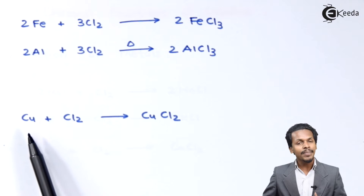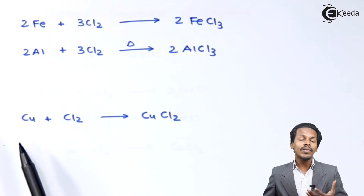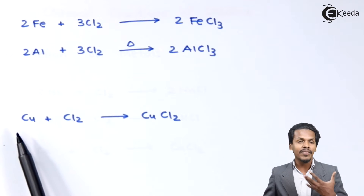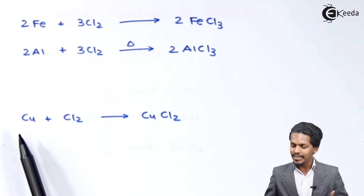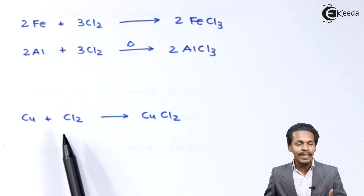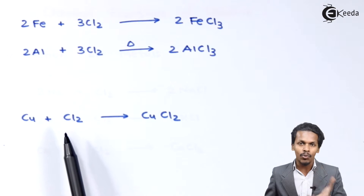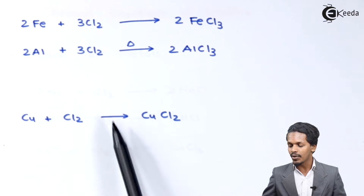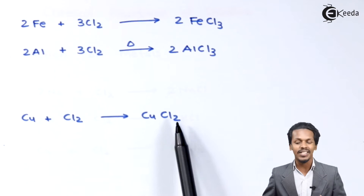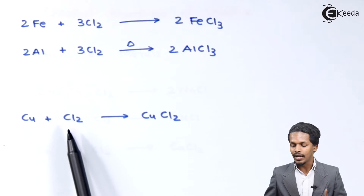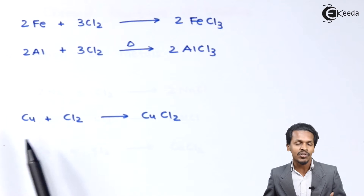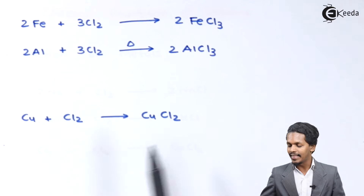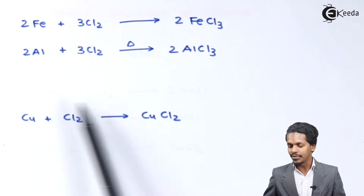Talking about copper — it has been found that whenever copper strips or a copper ribbon is inserted into chlorine gas, it catches fire and forms a salt, CuCl₂. This shows that chlorine is very much reactive to copper.